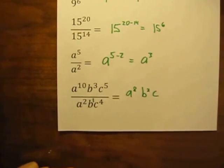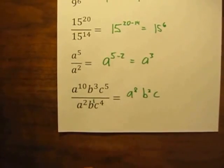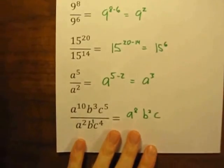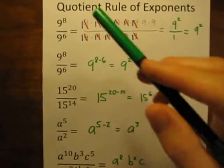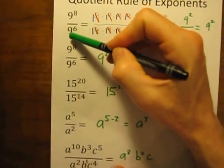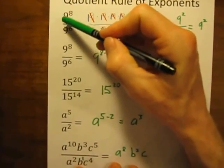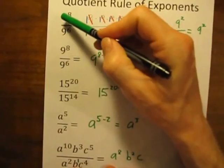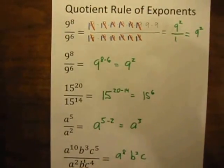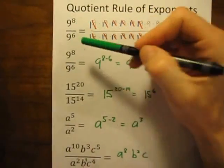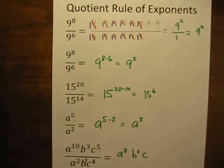So that's the quotient rule of exponents. Just remember: the bases have to be the same, you have to have a division problem, and when you do, you can just take those exponents and subtract them.